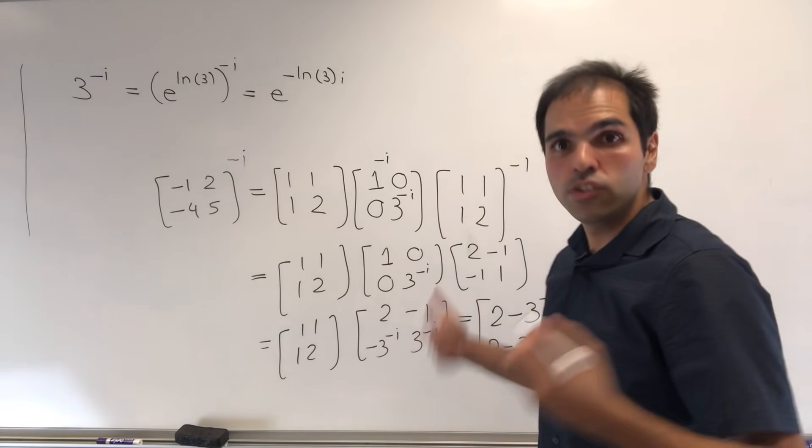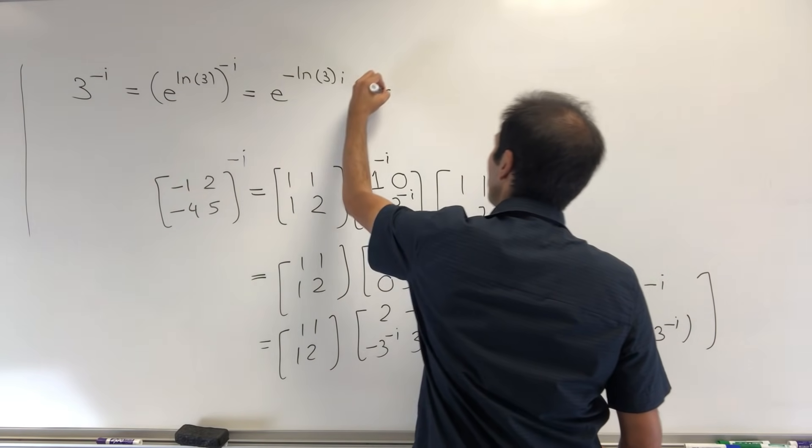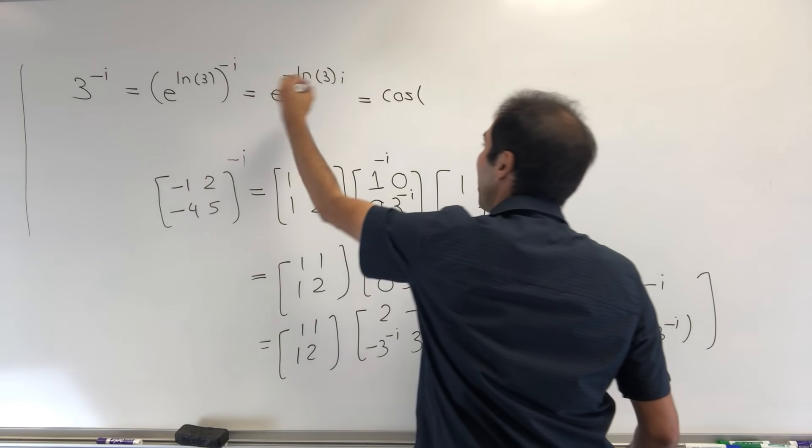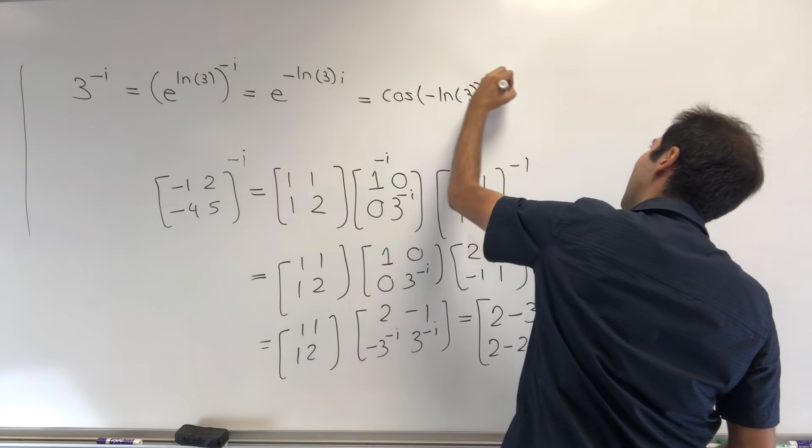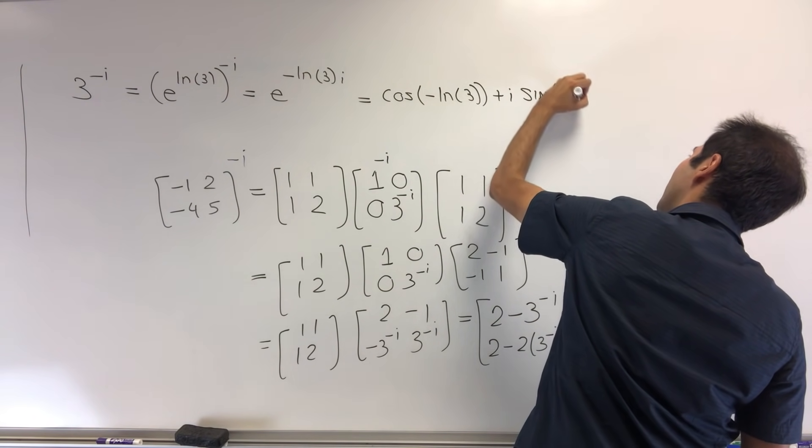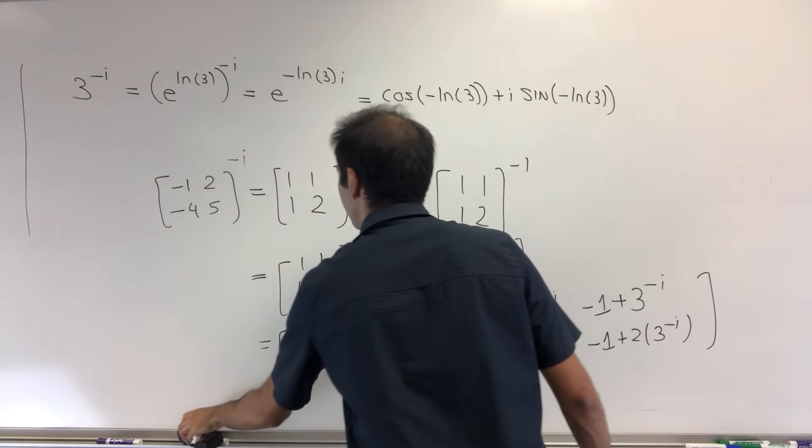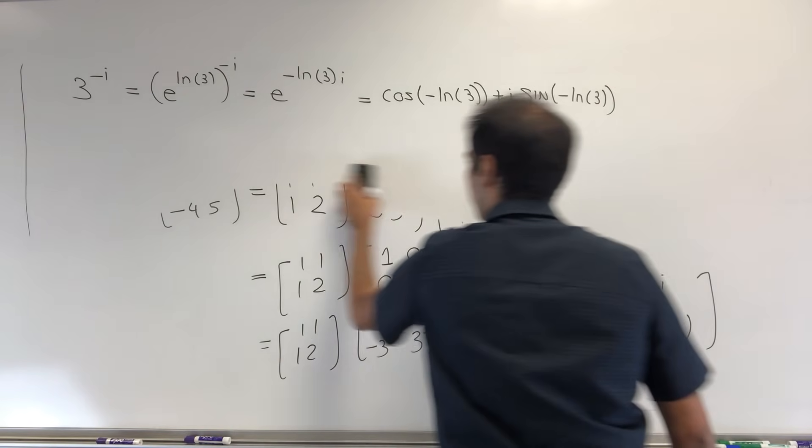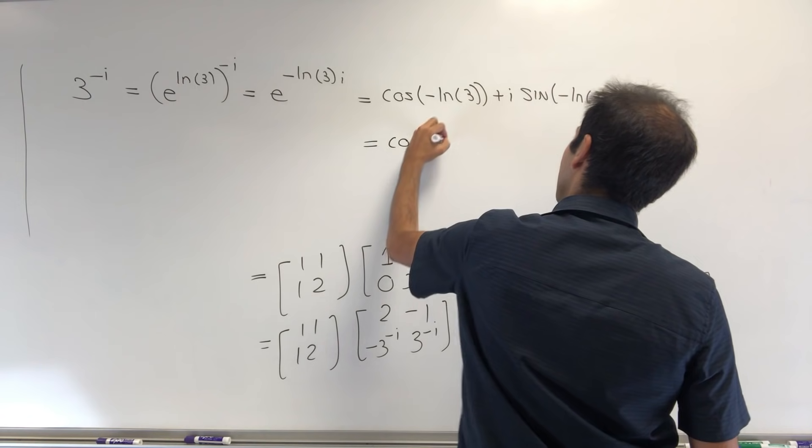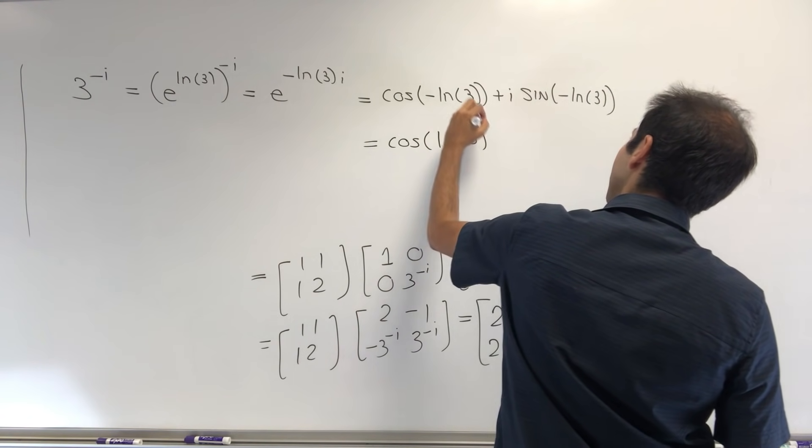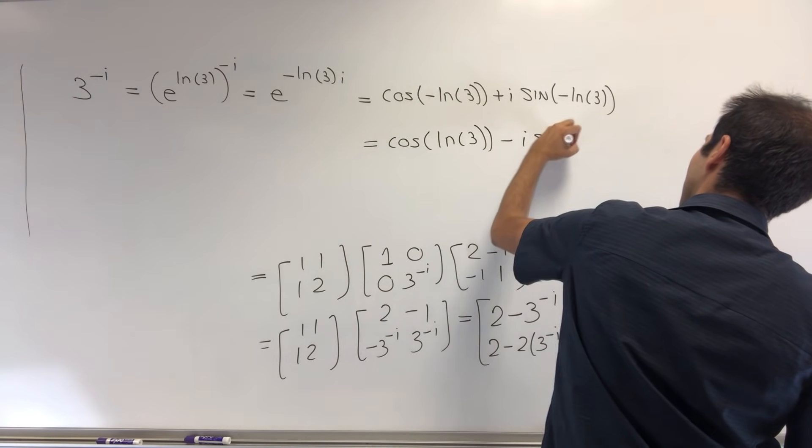And then by DeMoivre's formula, or Euler's formula, this becomes cos(-ln(3)) + i·sin(-ln(3)), which is cos(ln(3)) - i·sin(ln(3)).